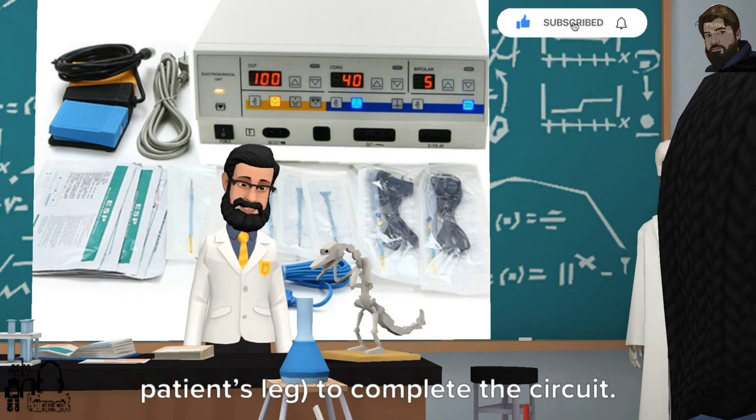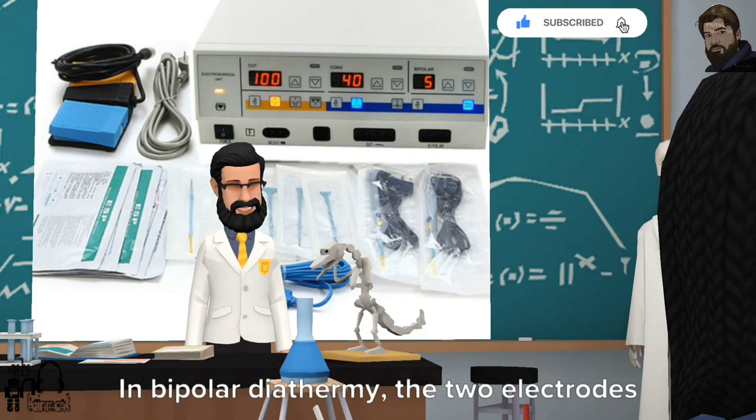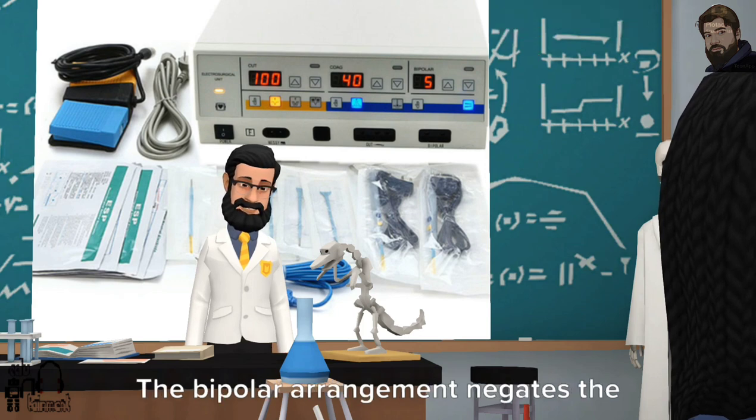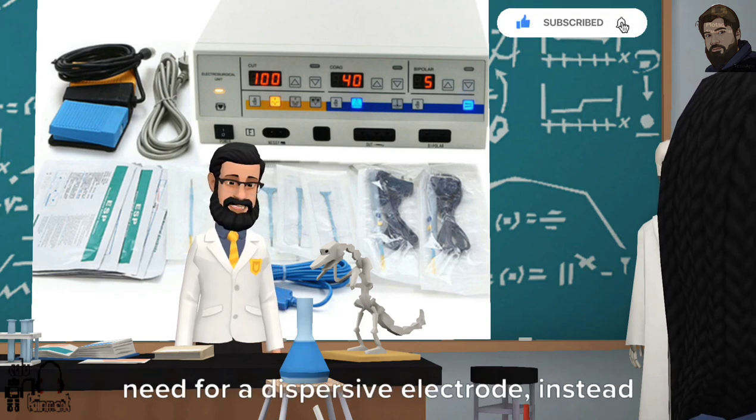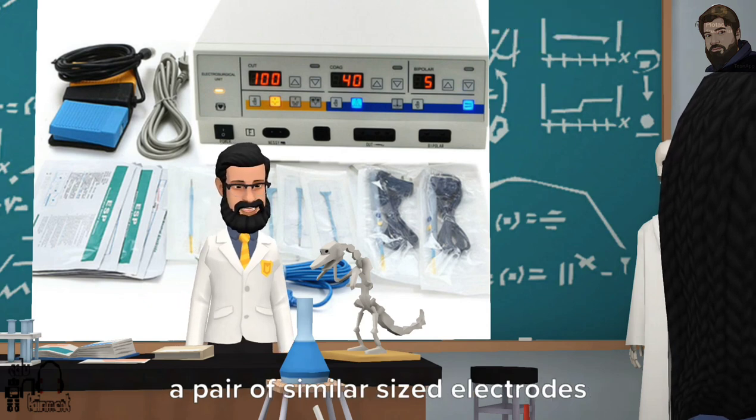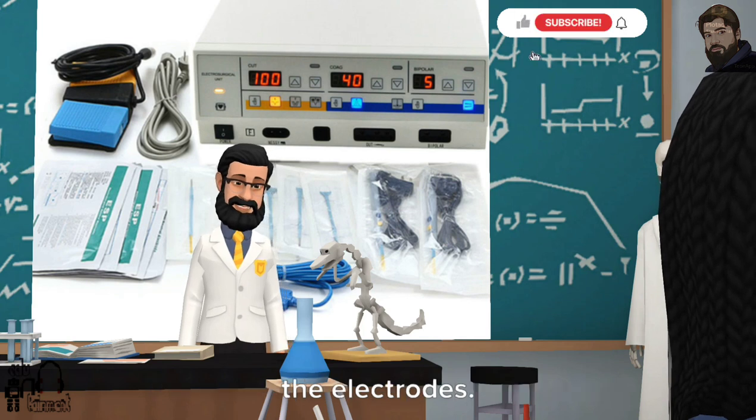What is bipolar? In bipolar diathermy, the two electrodes are found on the instrument itself. The bipolar arrangement negates the need for a dispersive electrode; instead a pair of similar sized electrodes are used in tandem. The current is then passed between the electrodes.